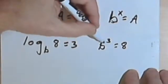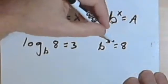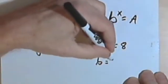So what number raised to the third power is 8? Well, that number is 2. So 2 to the third power is 8. So b equals 2.